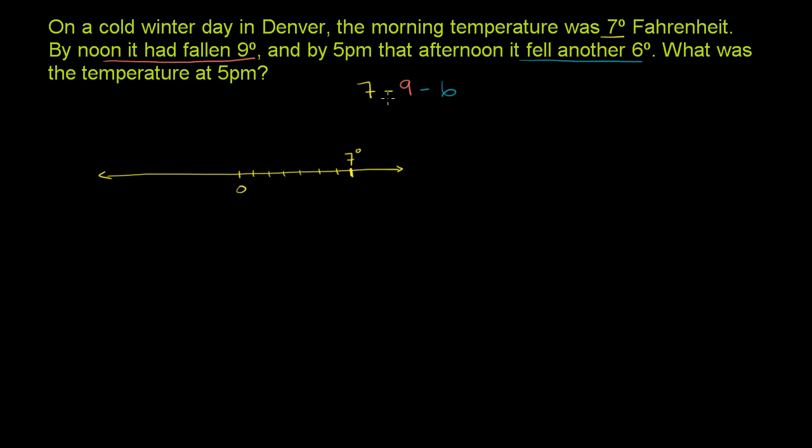On the number line, when you subtract something, you're really just moving to the left. So you start at 7 and we're going to move 9 to the left. One way to think about it is if you move 7 to the left, you get back to 0, and then you have to do 2 more to get to 9. So we're going to get to negative 2 degrees.